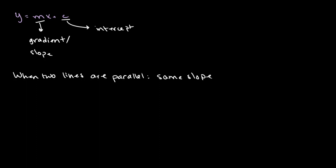So, for example, this is some arbitrary line where m is equal to 1/2. And this is another arbitrary line where m is also equal to 1/2. Then these two lines are parallel to each other.